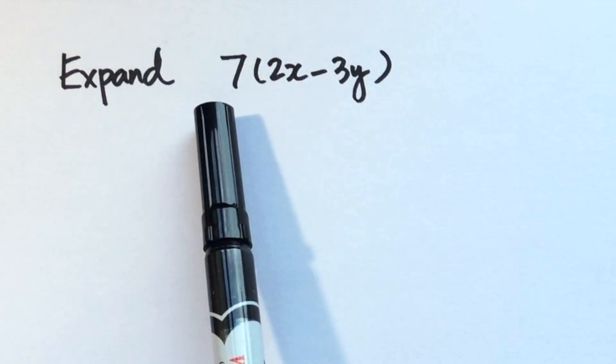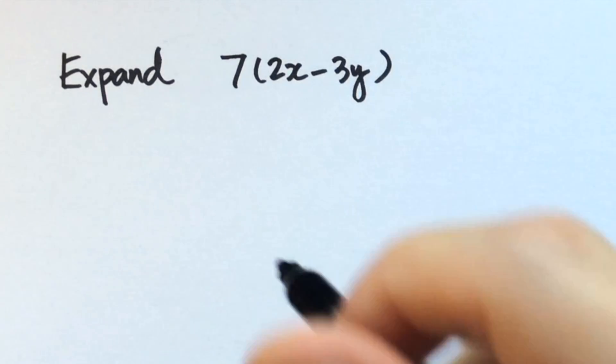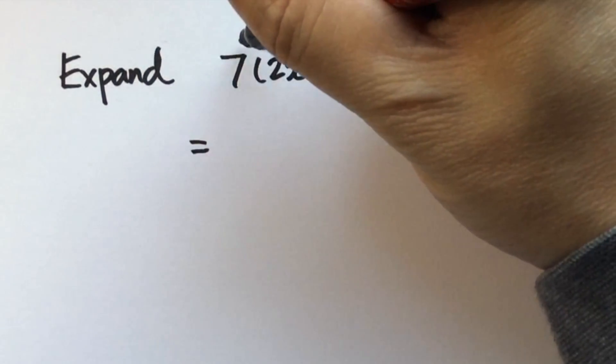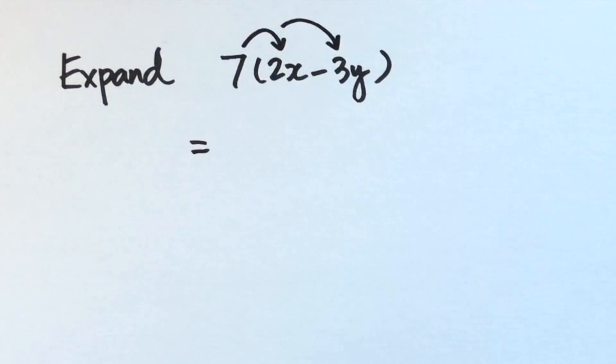Example: expand 7(2x - 3y). We can make use of the distributive law. We multiply the seven to each term inside the bracket, but first of all, don't forget the terms.